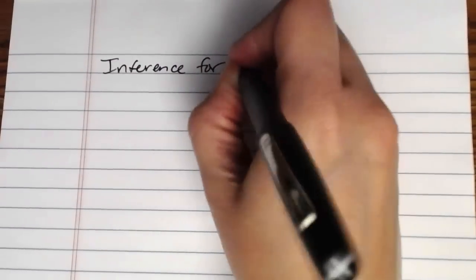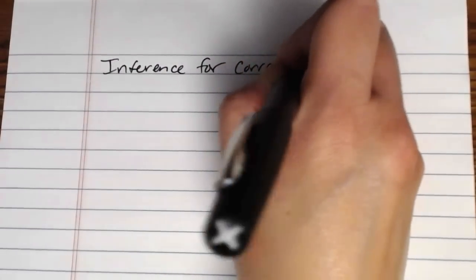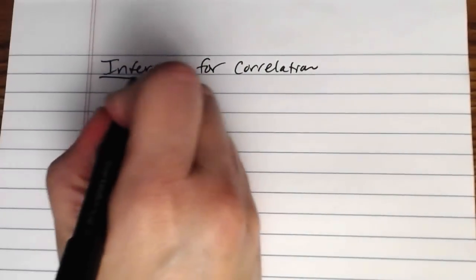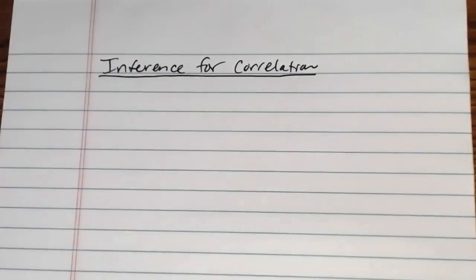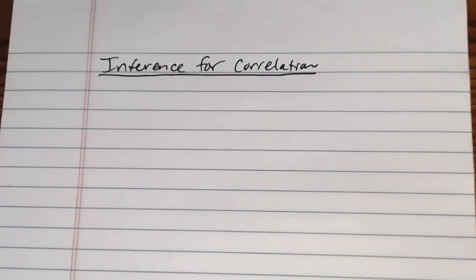In this video we're going to be taking a look at inference for correlation. There are actually many different types of inferences that we can do for correlation and lines of regression, lines of best fit, but we're really going to focus on one in this particular section.